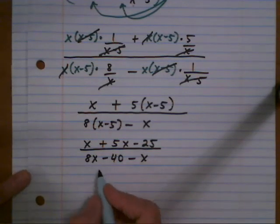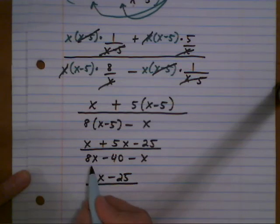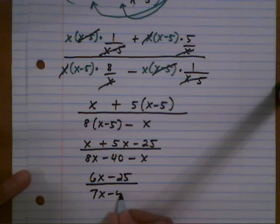And combined like terms we get on the top 6x minus 25. On the bottom we have 8x minus x, 7x minus 40.